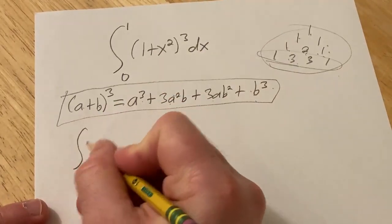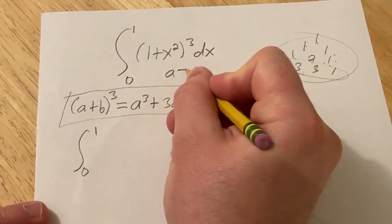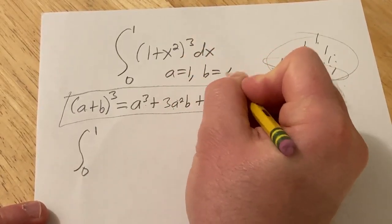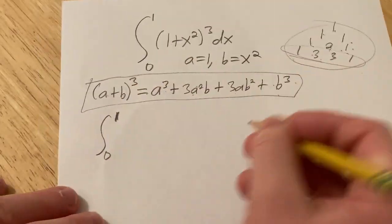All right, so in our problem here we have 0 to 1. So our a in this particular problem is 1, and our b is x squared. Okay, so let's go ahead and go through this.